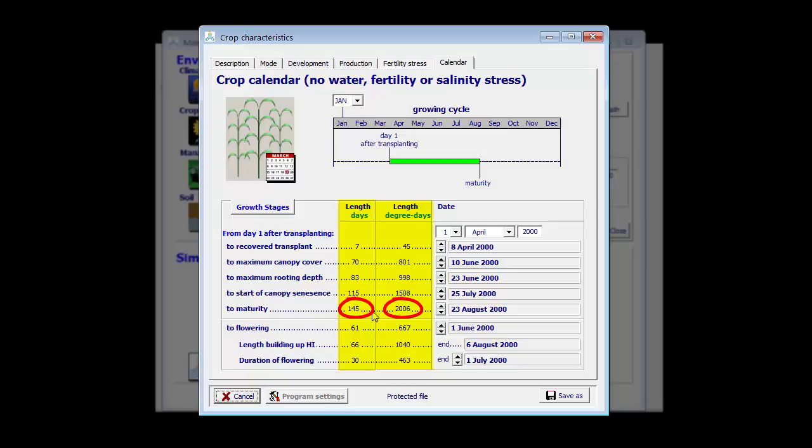Starting from now, since AquaCrop is running in growing degree days, if I change the year or the planting date, AquaCrop will consider the growing degree days and then calculate how many days are required. Let me show you that. For the moment I have 145 days. If I plant earlier, for example on the 1st of March,